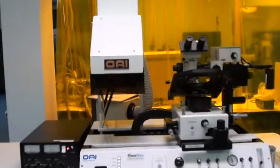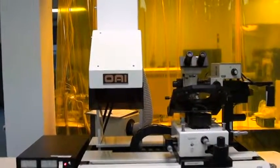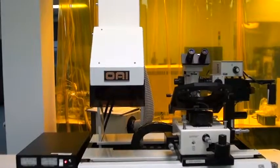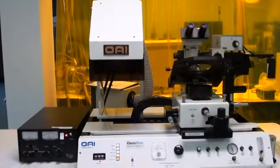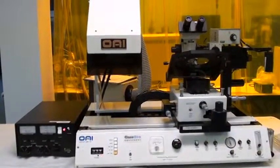All right, thanks for watching. Once again, this is Class 1 Equipment's Proof of Life Video for ID 3981, an OAI Hybriline 200 Mask Aligner. Thank you very much.